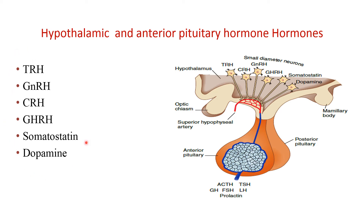These are the hormones or peptides secreted by the neurosecretory cells: thyrotropin-releasing hormone, gonadotropin-releasing hormone, corticotropin-releasing hormone, growth hormone releasing hormone, somatostatin, and dopamine. Four of them are excitatory, whereas somatostatin is inhibitory — it inhibits growth hormone secretion — and dopamine tonically inhibits prolactin secretion.